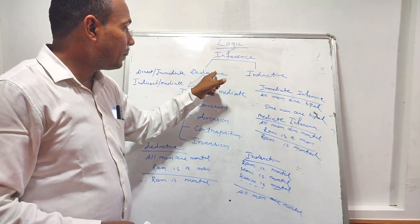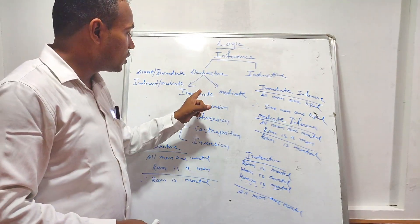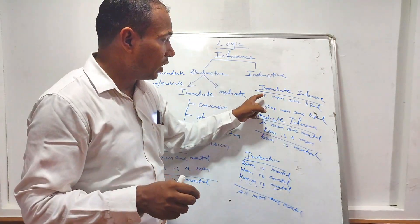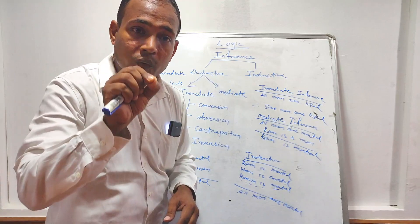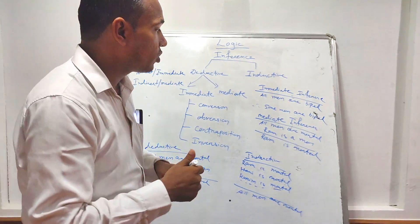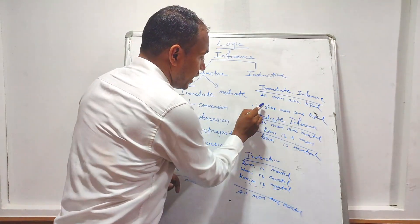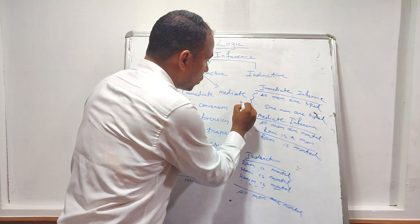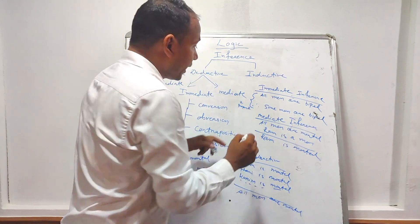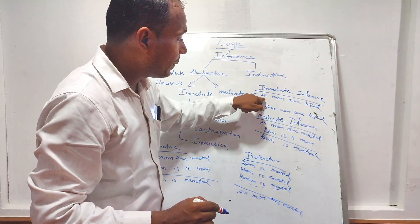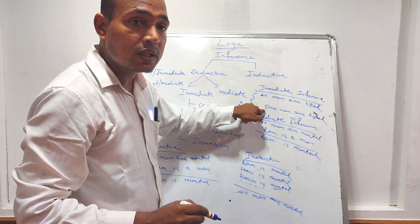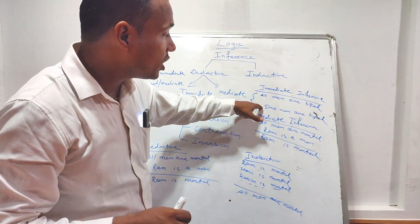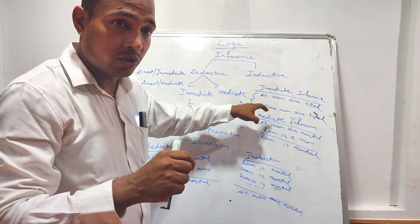Deductive inference is divided into two types: immediate and mediate. In immediate inference, the conclusion is drawn from one premise only. There are two propositions — a premise and a conclusion — and the conclusion is drawn from that one premise.